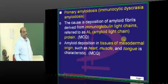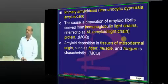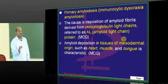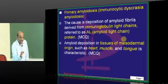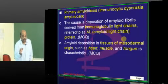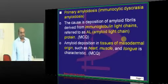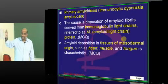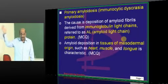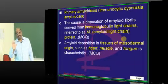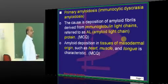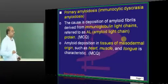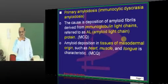An important commonly asked exam question: in primary amyloidosis, in which viscera do you find amyloid deposition? Primary amyloid will deposit in different viscera compared to secondary. Tissues of mesodermal origin are affected in primary — heart, muscle, and tongue, causing macroglossia.